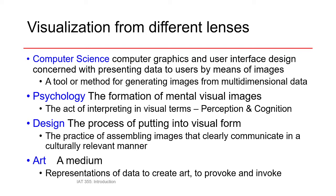The first one listed is computer science. Computer scientists tend to be interested in computer graphics and user interface design, concerned with presenting data to users by means of images — basically what this course is about. The kind of thing computer scientists are interested in doing is creating tools or methods for generating images from multidimensional data. Computer scientists focus on the techniques, developing and improving methods for generating images from multidimensional data using the computer.